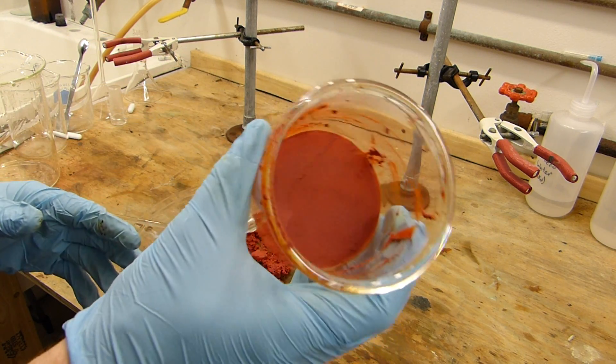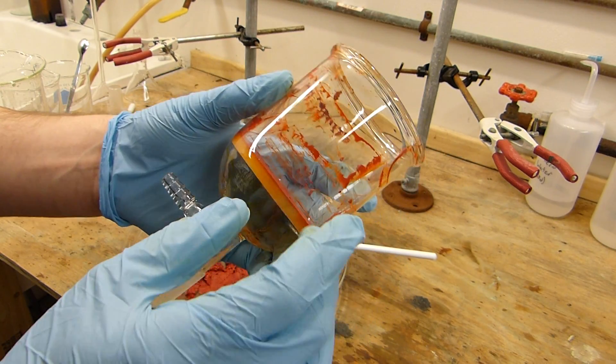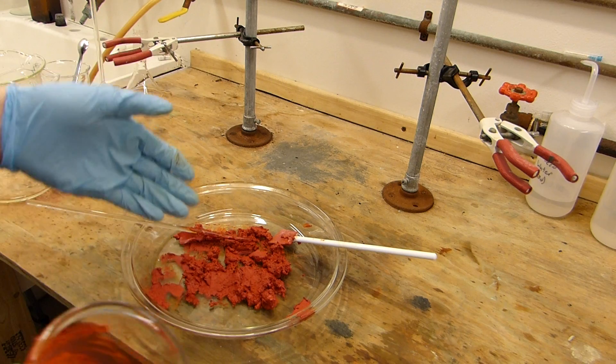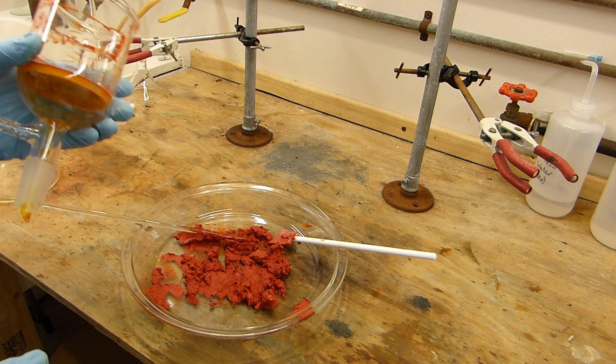I suppose I should have cycled the temperature a few more times to increase the crystal size. Next time if I do this, I'm definitely going to do that. But anyway, I've got a decent yield. I'm going to try and get it off this rubber spatula as soon as possible because it's probably going to eat right through it.